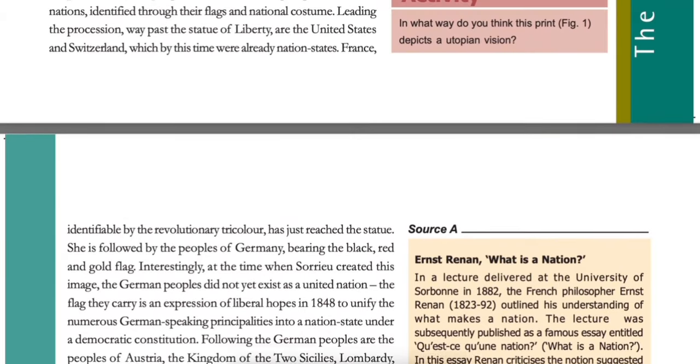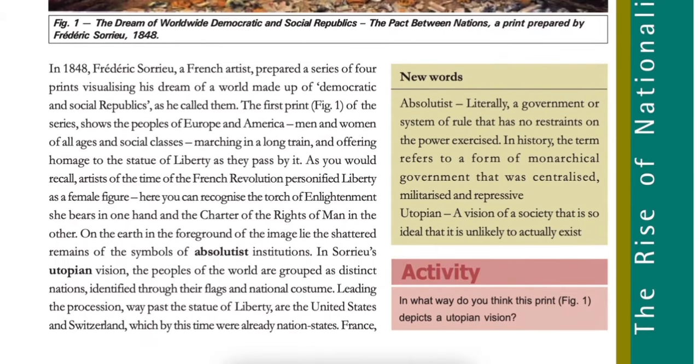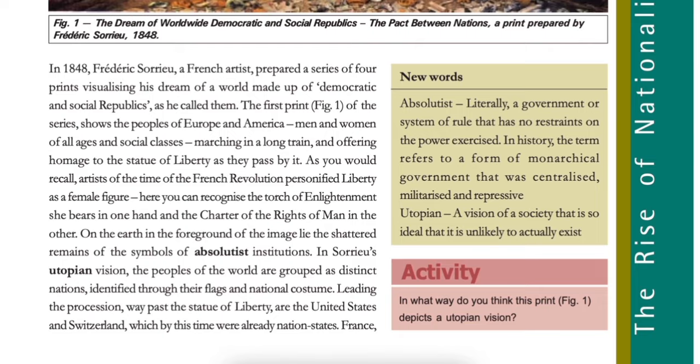Now let us see the source. On the first page are the new words. Absolutist: literally, a government or system of rule that has no restraints on the power exercised. In history, the term refers to a form of monarchical government that was centralized, militarized and repressive. Utopian: a vision of a society that is so ideal that it is unlikely to actually exist.